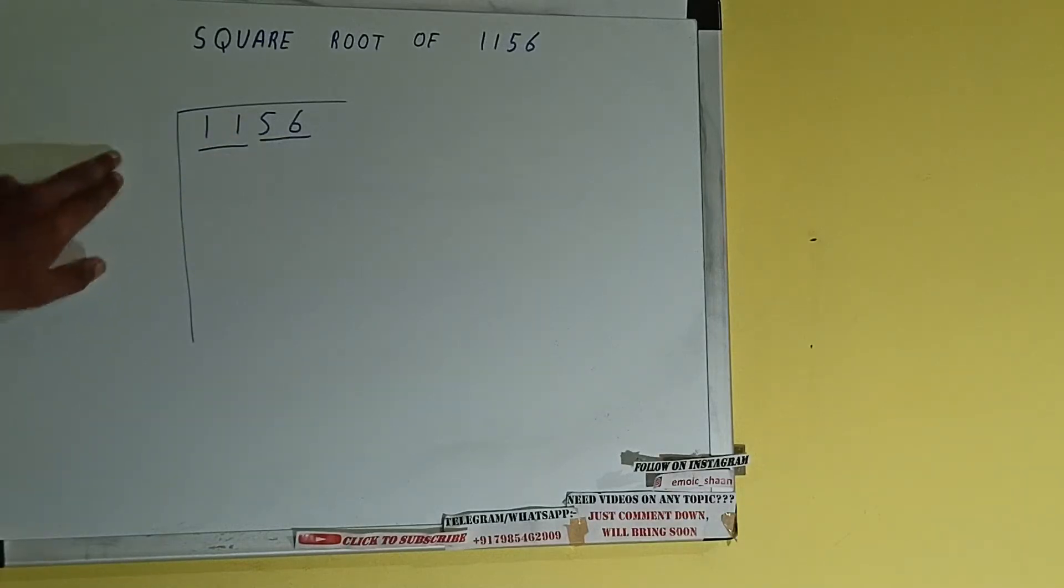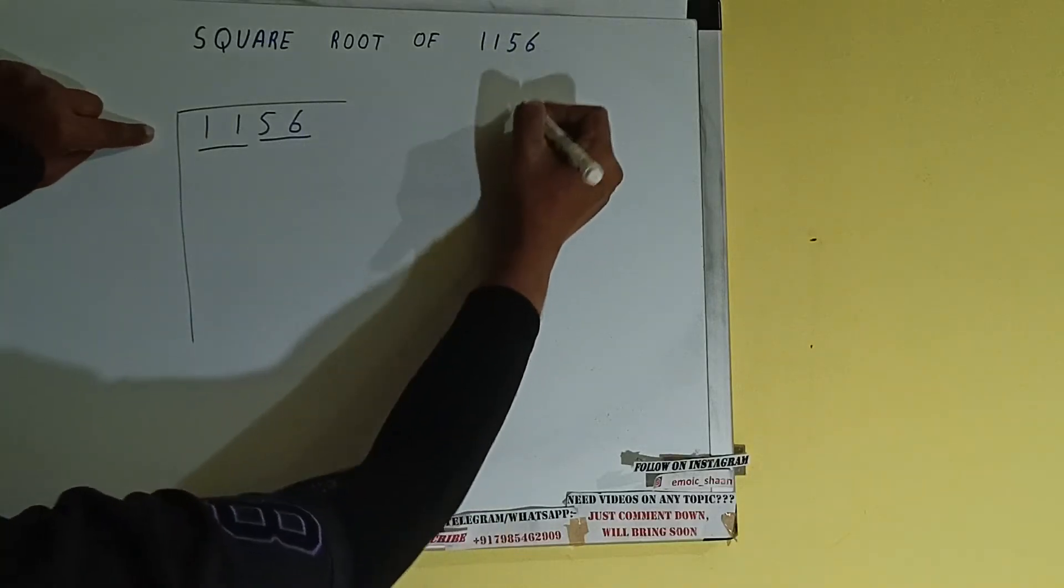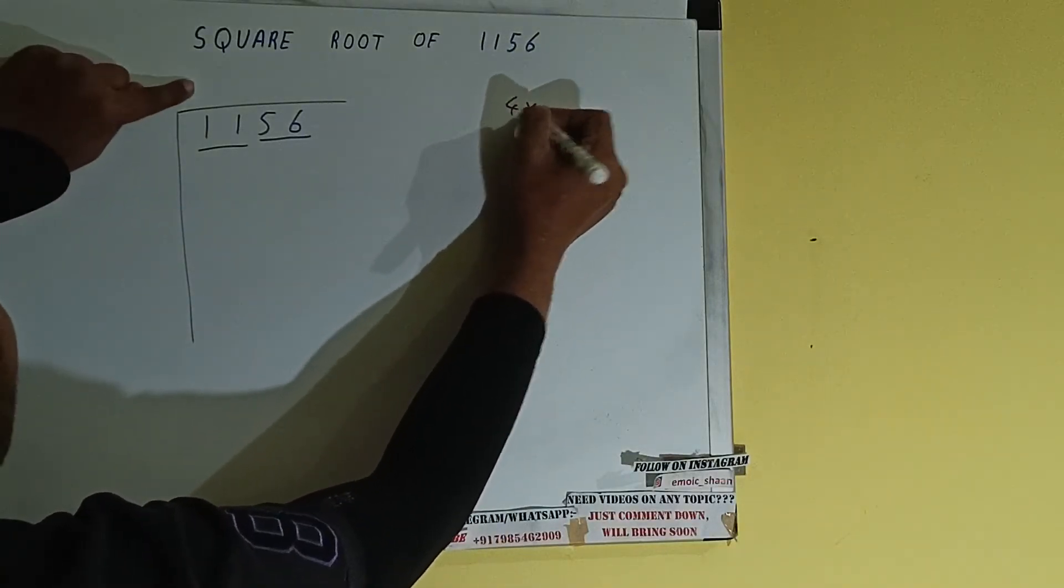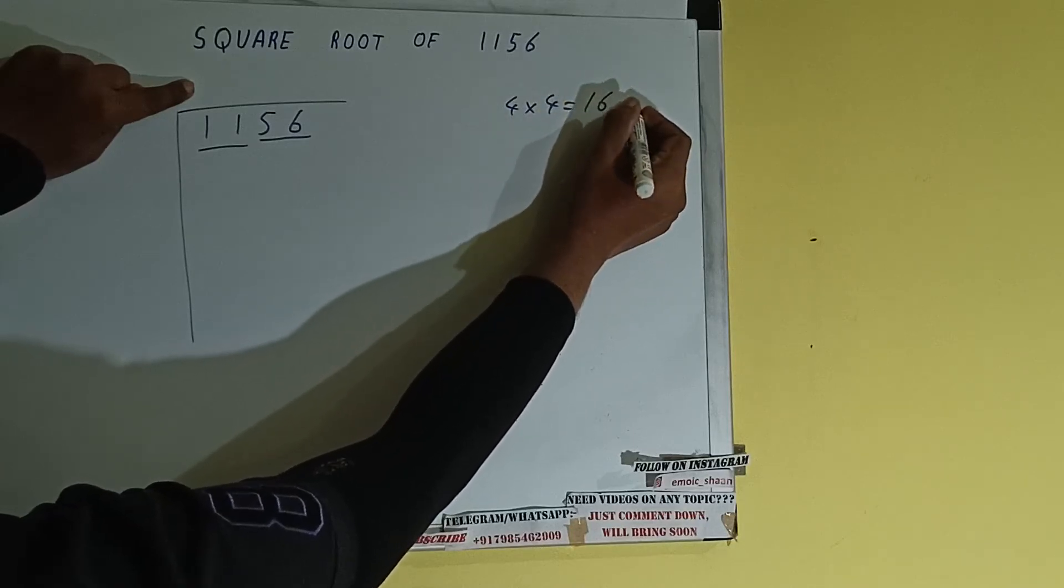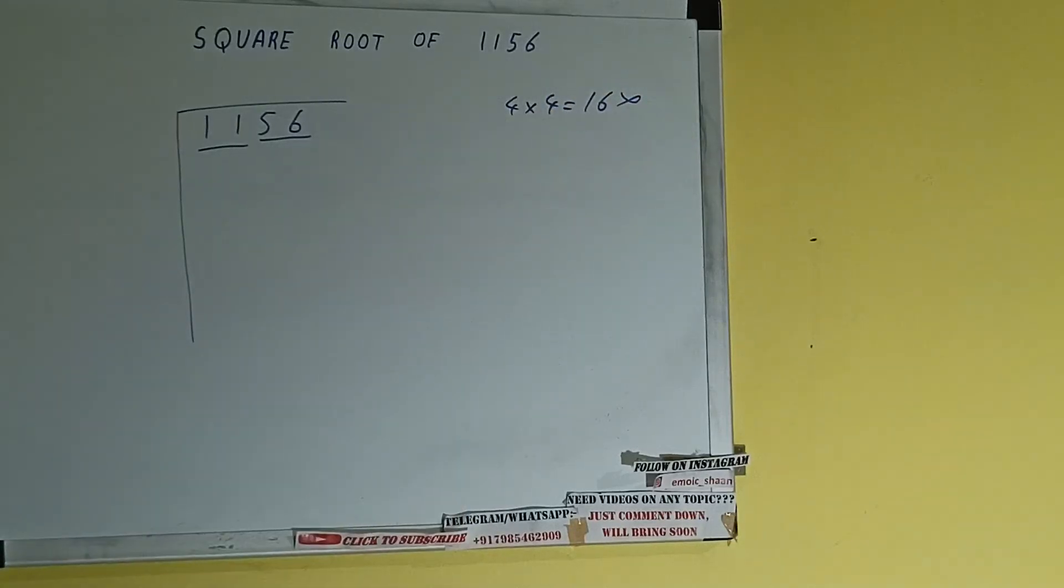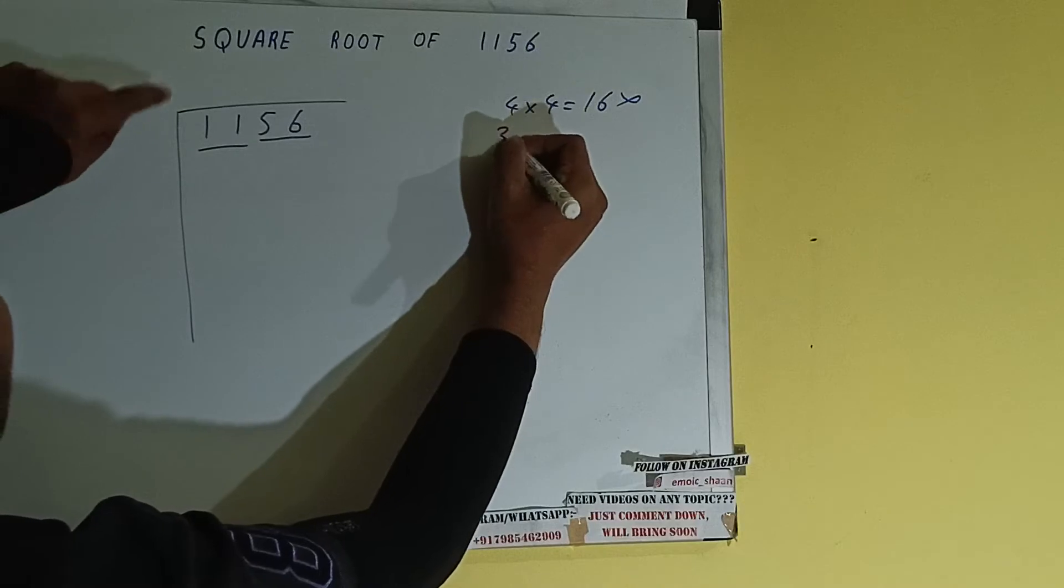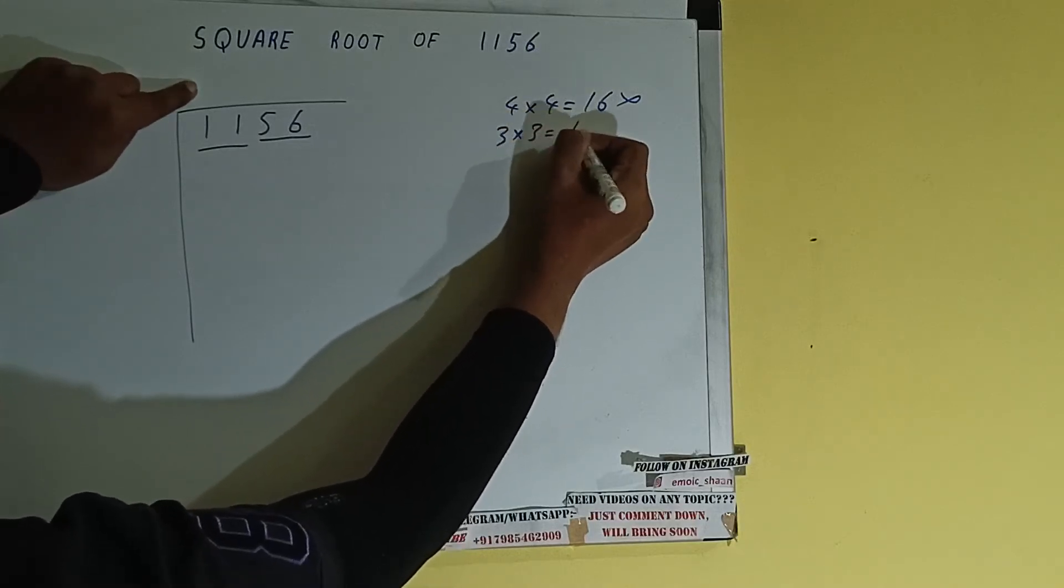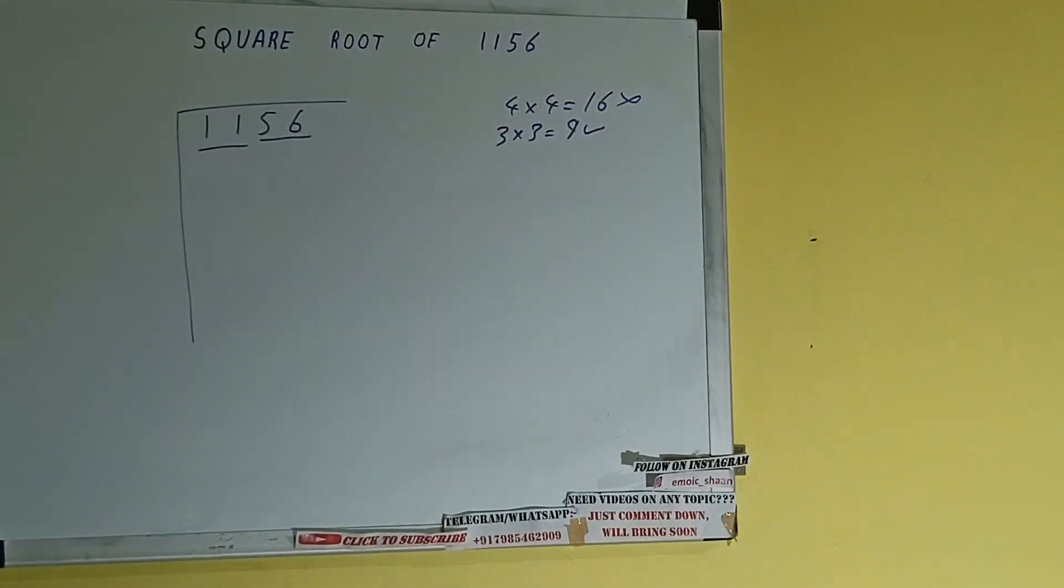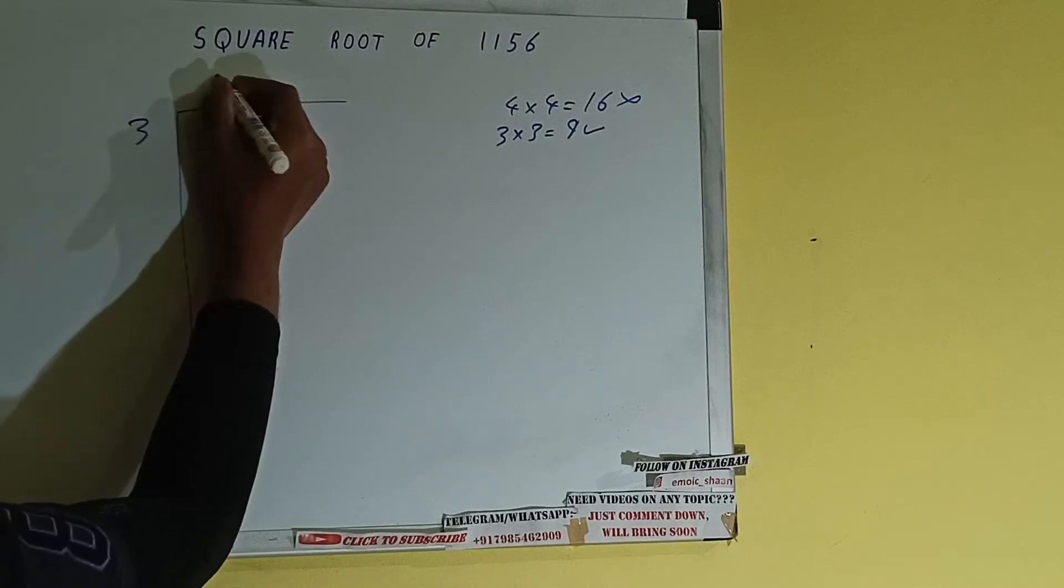The rule is whatever number we write here, we have to write here also. So if we write 4 here and 4 here, it will be 16 which is greater than 11, so we cannot take it. If we write 3 here and 3 here, we'll be getting 9 which is good to take. So 3 here and 3 here.